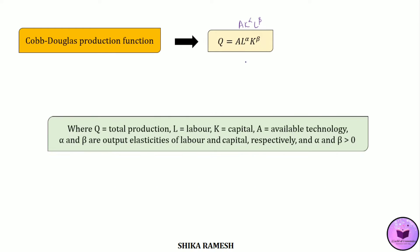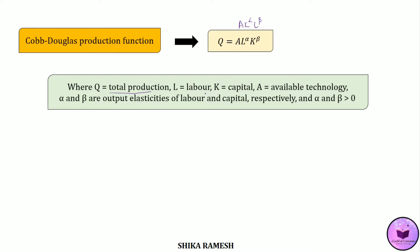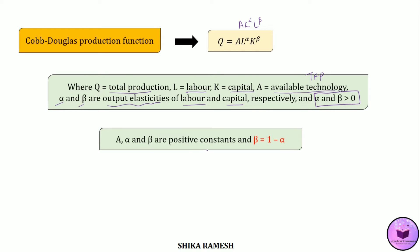Here, Q represents the total output or total production, L is the labor, K is the capital, and A represents the available technology or the total factor productivity. Alpha and beta are the output elasticities of labor and capital, and the values of alpha and beta will always be greater than 0, which is why alpha and beta are positive constants.